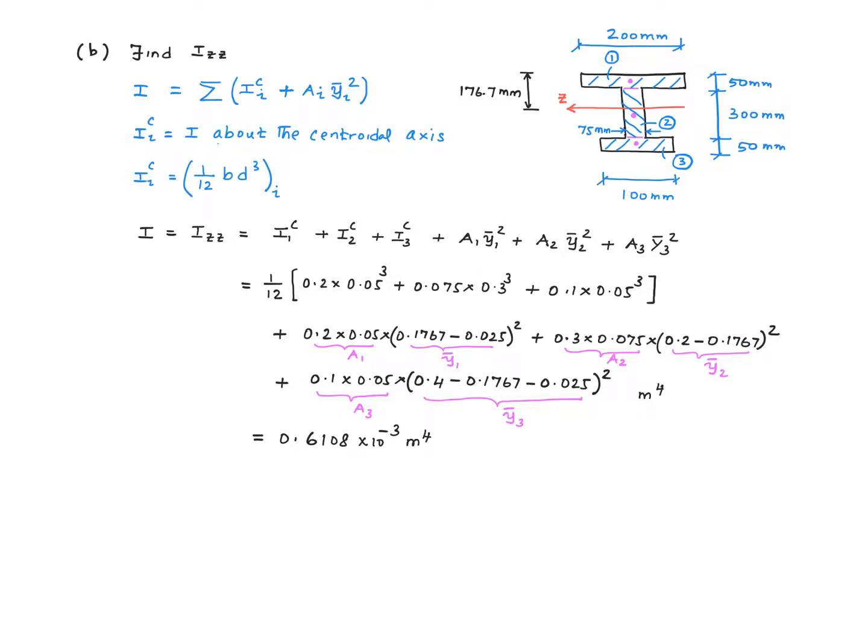Each of these terms has 1 over 12 as a fraction, common fraction. So I pull that out of the bracket here. So for the first sub-area, b is the dimension parallel to the axis. That'll be 0.2. So that's what I have over here. And d is the depth of that little subsection. That'll be this dimension right there, or 50 millimeter or 0.05 cubed. So the other i's are similarly defined.